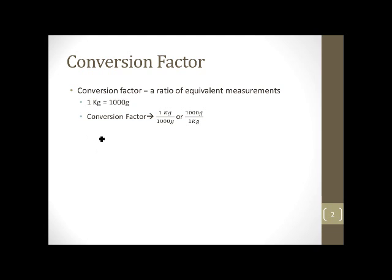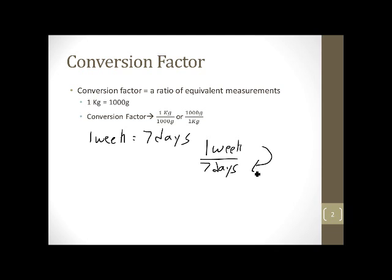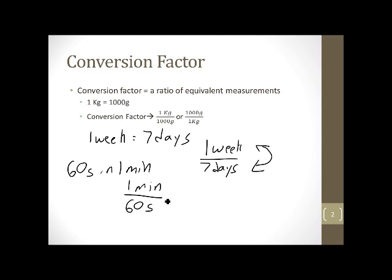There are other examples. How many days in a week? 1 week equals 7 days, so the conversion factor from days to week would be 1 week over 7 days, or 7 days over 1 week. Similarly, 60 seconds in 1 minute gives us 1 minute over 60 seconds, or vice versa. These would each be conversion factors.